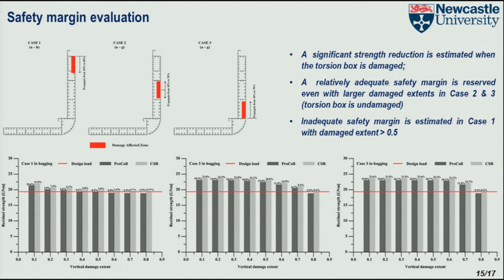Here are the residual strength index diagrams we developed. The residual strength index is defined as the ratio of the residual ultimate strength to the intact ultimate strength, plotted as a function of the vertical damage extent. This could be an efficient way to make a fast estimation of the residual ultimate strength for containerships of similar type under a given damage scenario, simply by interpolating the results presented in these diagrams. These diagrams could further be converted into a set of empirical regression formulas, though we did not do that.